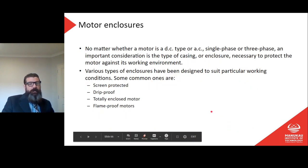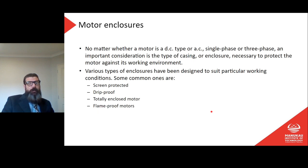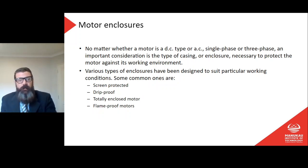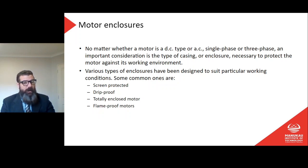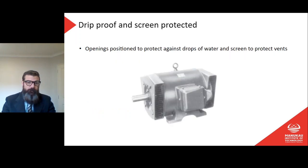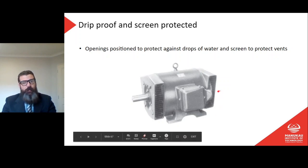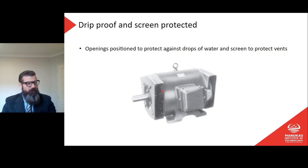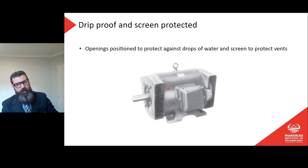An important consideration is the type of casing or enclosure necessary to protect the motor against its working environment. Various enclosure types have been designed to suit particular working conditions. Some common ones are: screen protected, drip proof, totally enclosed, and flame proof. For drip proof and screen protected types, the openings are positioned to protect against drops of water, and screens protect the vents — so no openings face upward, preventing anything from dripping down into the motor.